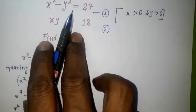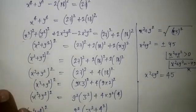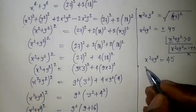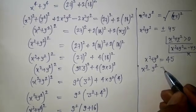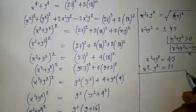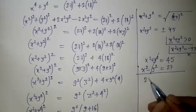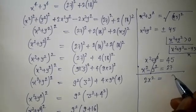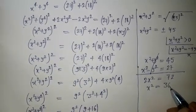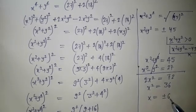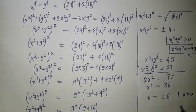We now have x squared plus y squared equals 45 and x squared minus y squared equals 27. Adding both equations together gives 2x squared equals 72, so x squared equals 36, and x equals positive or negative 6. Since we need only the positive value, x equals 6.